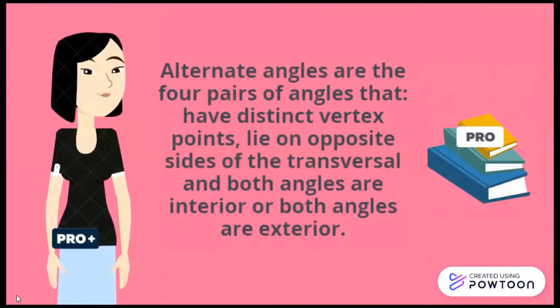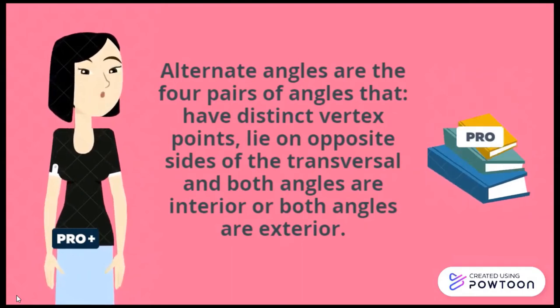Alternate angles have four pairs of angles that have distinct vertex points, lie on opposite sides of the transversal, and both angles are interior or both angles are exterior.